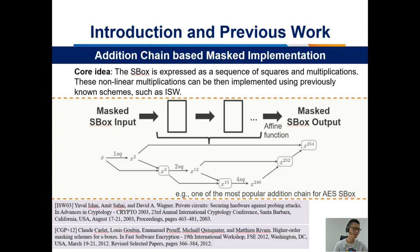Addition chains are widely used for computation-based masked S-Box implementations. Specifically, the S-Box can be expressed as a sequence of squares and multiplications. These nonlinear multiplications can then be implemented using previously known schemes such as ISW. Here is one of the most popular addition chains for the AES S-Box, and lots of masked schemes are used in this addition chain — for example, Boolean masking, Mixed Additive and Multiplicative masking, and Inner Product masking.